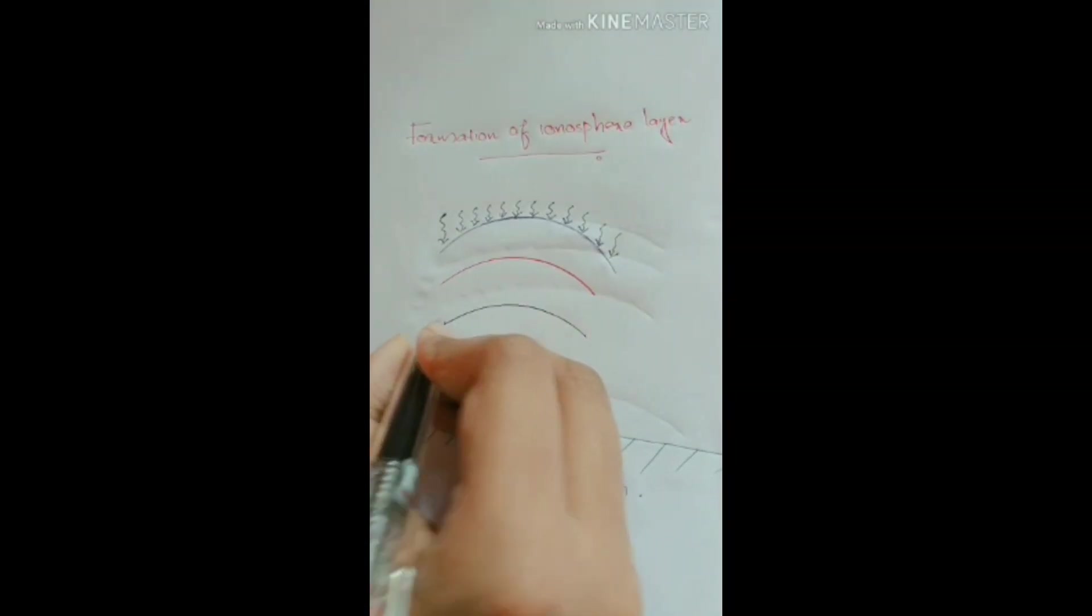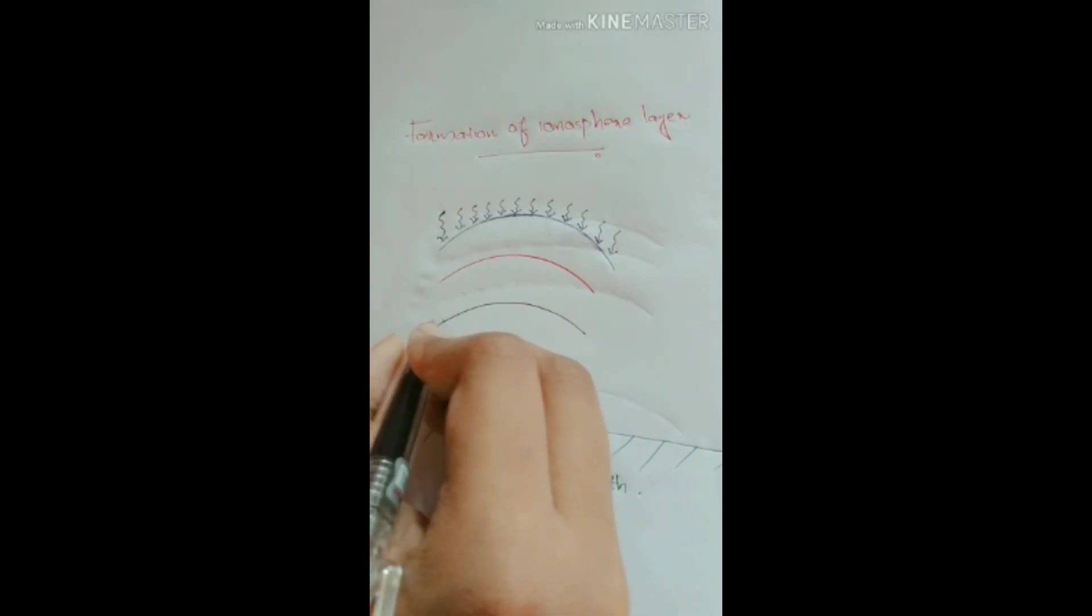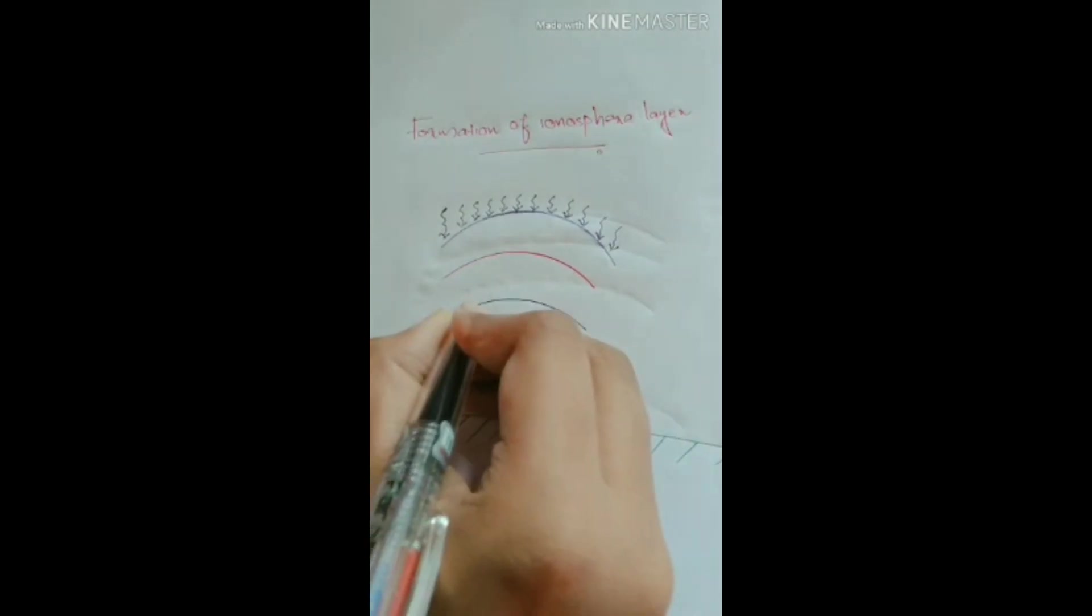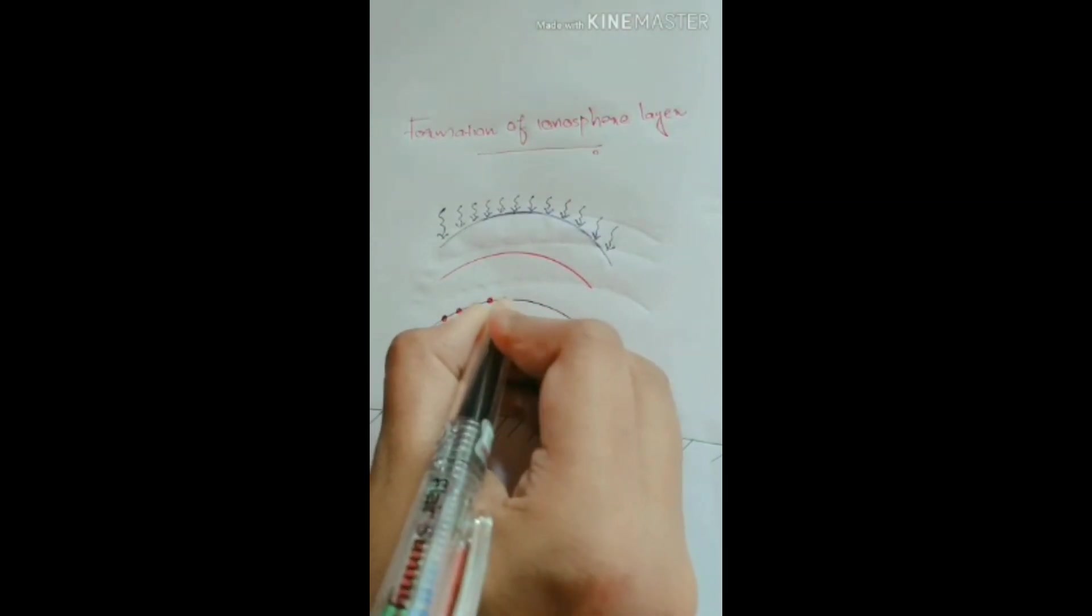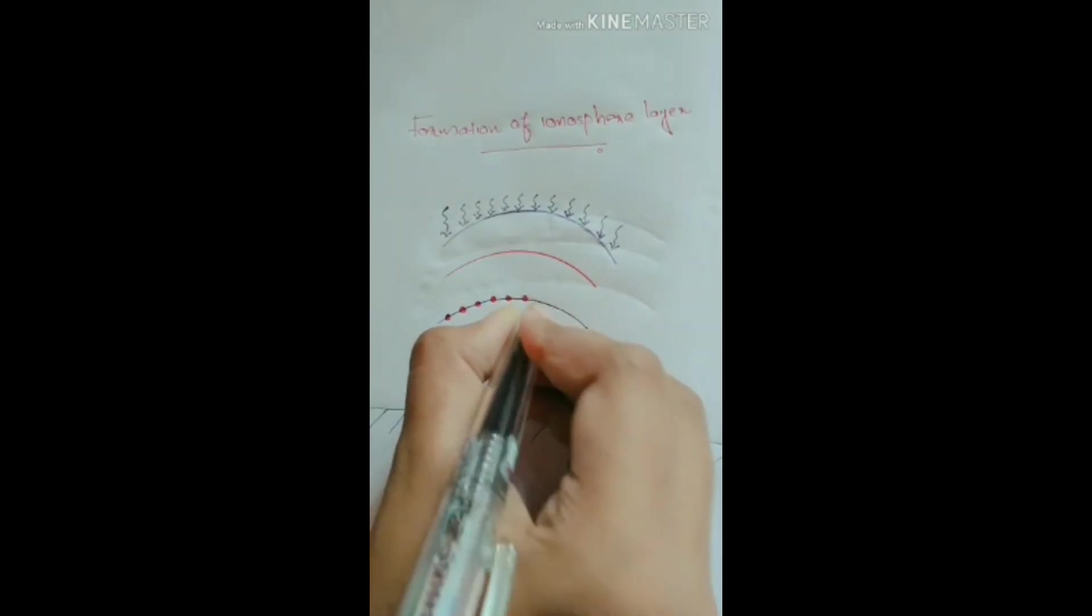Density of atoms is very high in the lower layers of the sky. We can draw the high density of atoms. Density of atoms is very high in the lower layer.